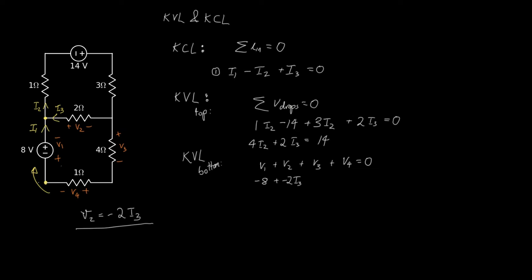Let's just relabel these currents here. This current is I1, so that current is still I1 and that current I1. So V3 is 4 times I1 and V4 is 1 times I1. That sums up to zero.